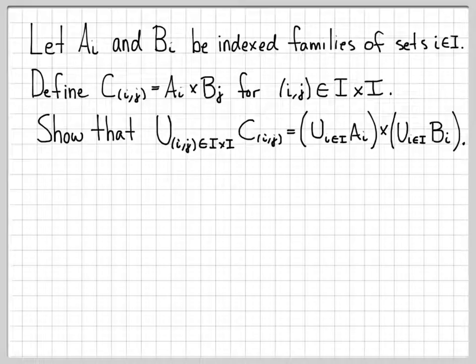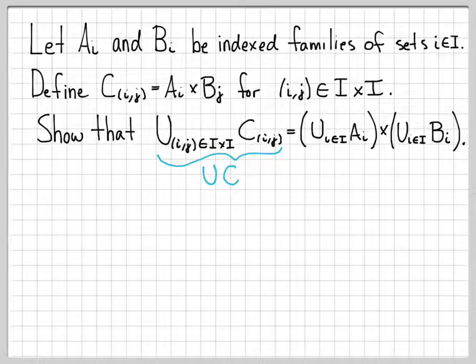Most of the time when we want to show an equality relationship, we show a subset relationship twice. So if we can show that the union of c is a subset of the right side, and the right side — union a Cartesian product union b — is a subset of the left side, then we'll have established that these two sets are equal. To save a little writing, I'll abbreviate with shorthand for the union over all tuples i comma j in the Cartesian product I×I of c_{i,j}.